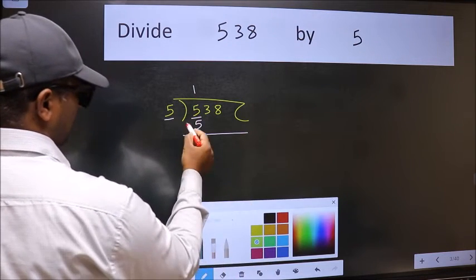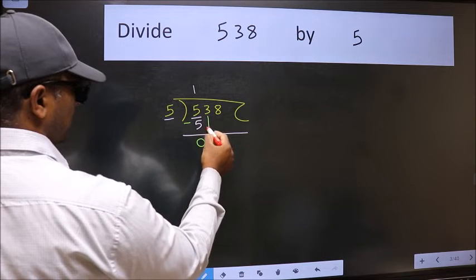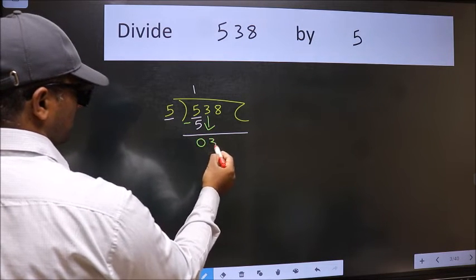Now we should subtract. We get 0. After this, bring down the beside number. So 3 comes down.